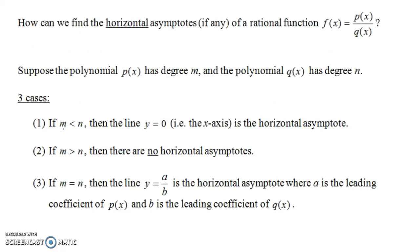We have three cases. If the polynomial in the numerator has a degree that's less than the degree of the denominator, then the x-axis — the horizontal line y equals zero — is the horizontal asymptote of the function. If it's the other way around, if the degree of the numerator is bigger than the degree of the denominator, then there are no horizontal asymptotes at all.